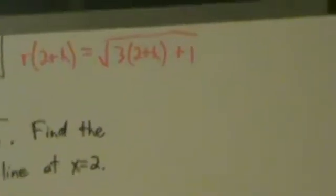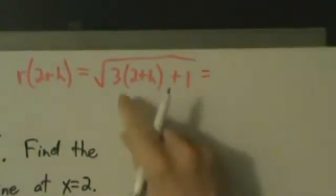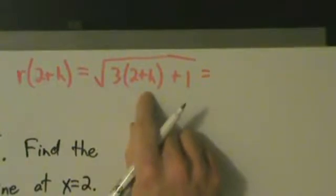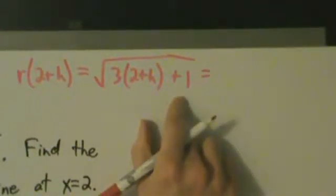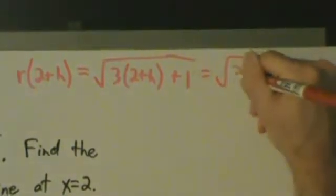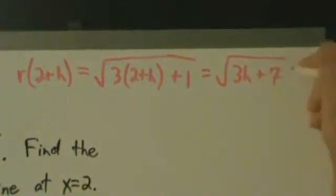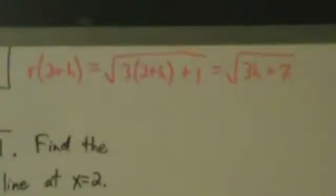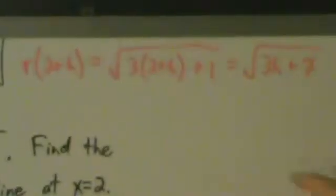So let's go ahead and simplify that. If we distribute the 3, then we're going to have 6 plus 3h, and then plus 1. So really, that's square root of 3h plus 7. Okay?